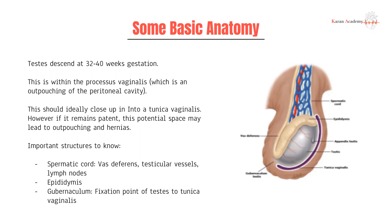This outpouching usually closes up to form the tunica vaginalis. You can have a situation where this remains open — the pathway through which the testes descended — and that's called a patent tunica vaginalis. This potential space is dangerous for a few reasons: it can lead to communicating infections because it's an open channel, and it can lead to hernias, in particular indirect inguinal hernias.